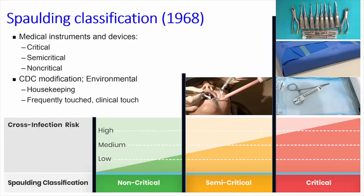This principle underlies the logic of the Spalding classification, which has been used in infection control since 1968. It breaks instruments and devices into a critical site, a semi-critical site, a non-critical site, and — more recently introduced by the CDC — environmental services in a healthcare setting, such as housekeeping services versus those frequently touched by clinicians. The risk is highest at the critical end in terms of transmission of a healthcare-associated infection. For surgery, we need items that have been sterilized and packaged to retain sterility until the point of use.